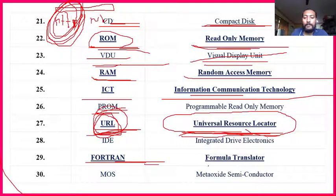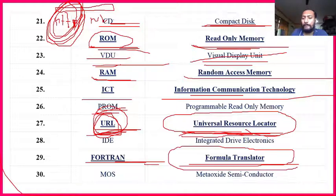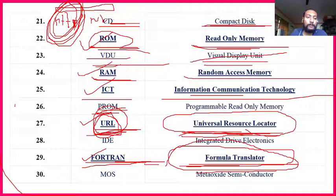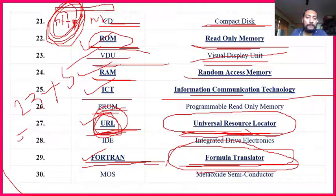FORTRAN — Formula Translator — is also important. So from this slide: ROM, RAM, ICT, URL, and FORTRAN — five items. Some are repeating like ROM and RAM, but URL is very important to know. Total so far becomes 23 plus 5 equals 28 important abbreviations.